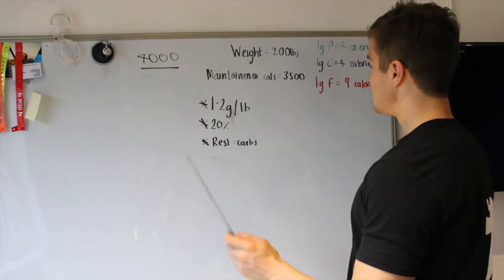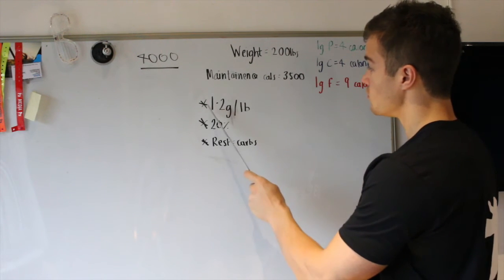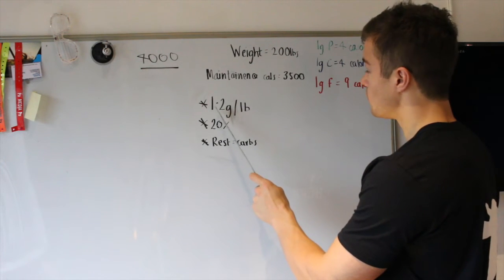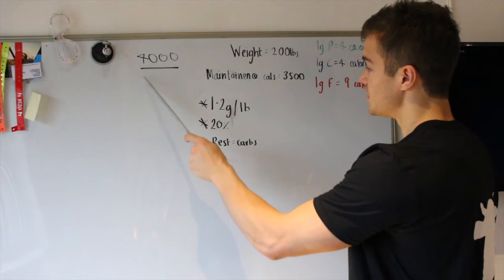So, protein intake. Mega easy again. It's 1.2 grams per pound of body weight. My body weight is 200 pounds. So, we're going to do 1.2 grams per pound of body weight times 200, which is my body weight, equals 240 grams.